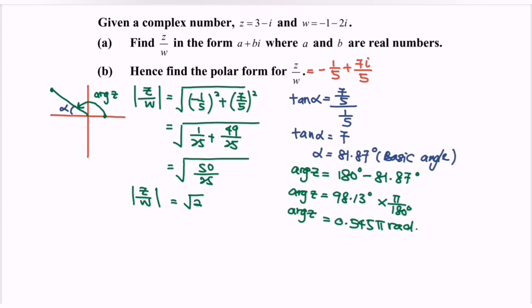For the polar form of z/w: z/w = √2[cos(0.545π) + i sin(0.545π)].